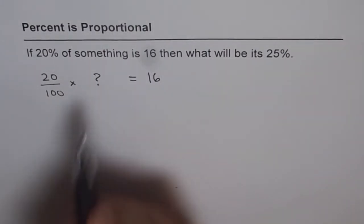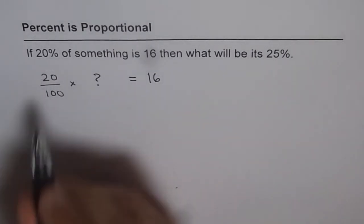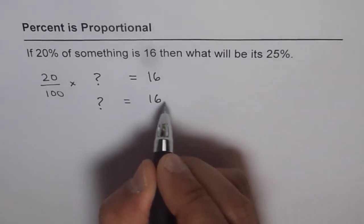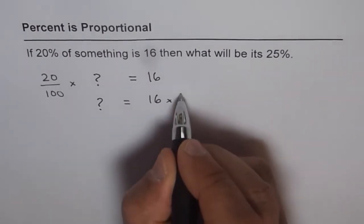So, let us find what we don't know. 20 is like 0.2, right? In any case, we can say this don't know will be 16 times 100 over 20.